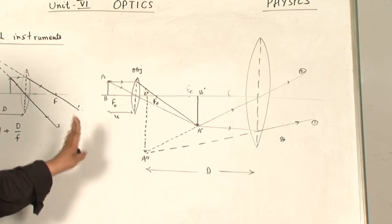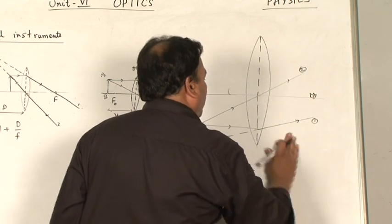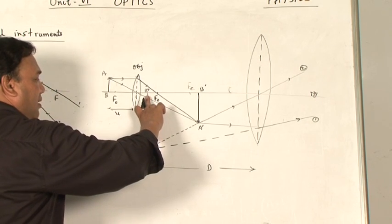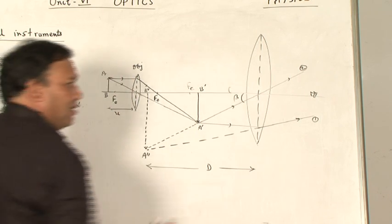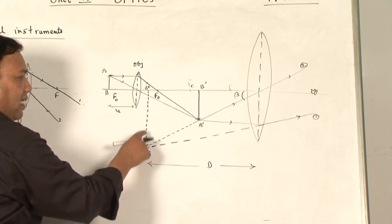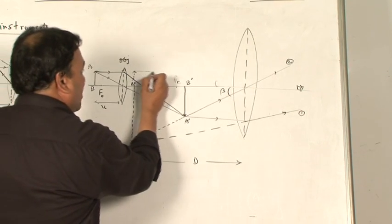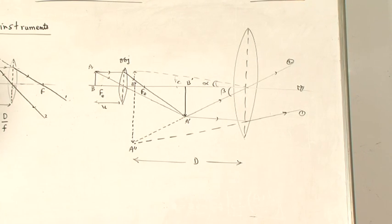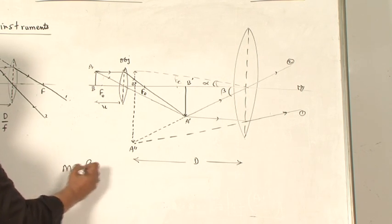This ray diagram is very important and we are looking from this side. The angle made by the final image at the eye is represented as beta. When the object is placed at the position of the final image, then whatever angle it subtends at the eye is represented as alpha.